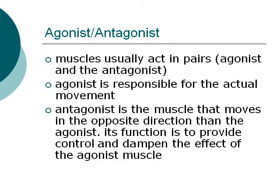Agonist and antagonist: muscles usually act in pairs. The agonist is responsible for the actual movement. The antagonist, on the other hand, is the muscle that moves in the opposite direction to the agonist. Its core function is to provide control and dampen the effect of the agonist muscle.